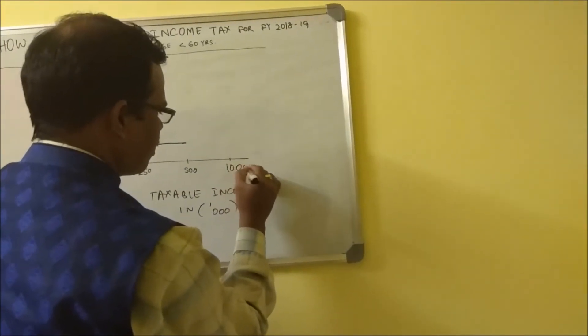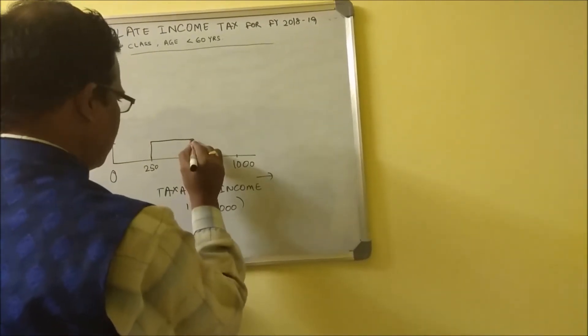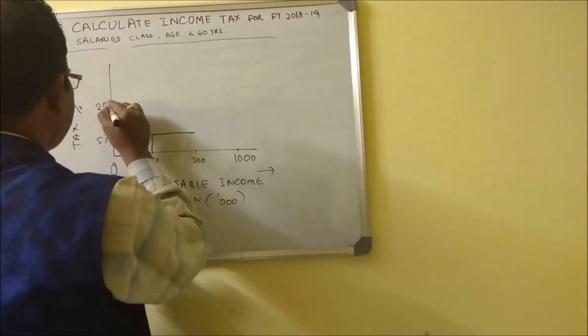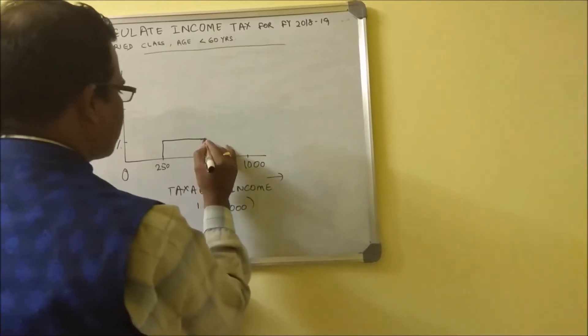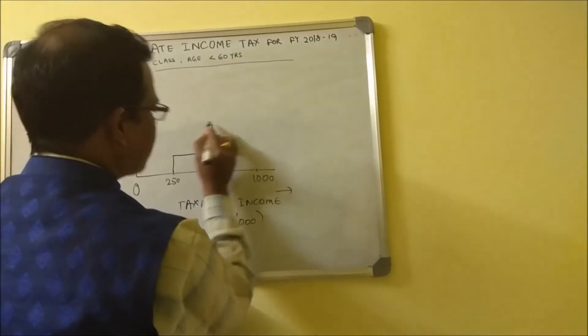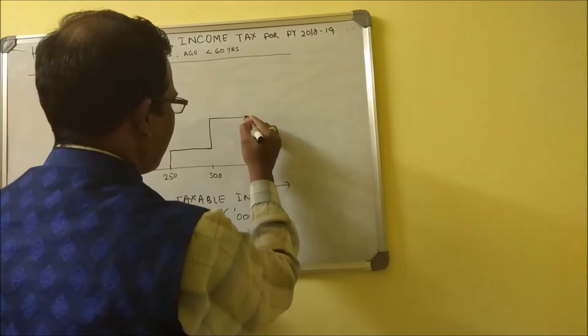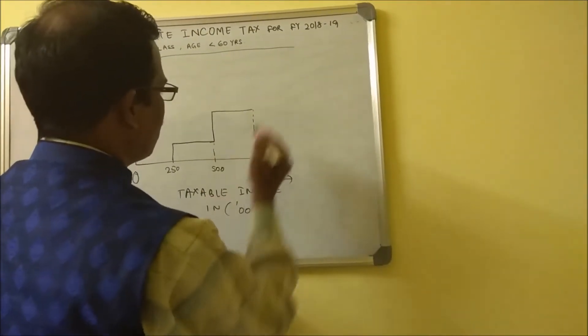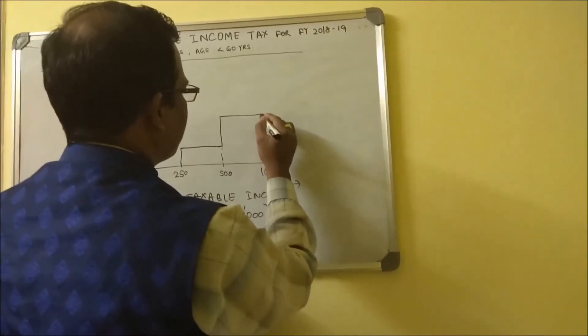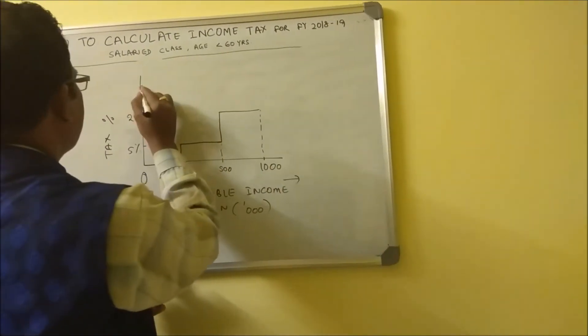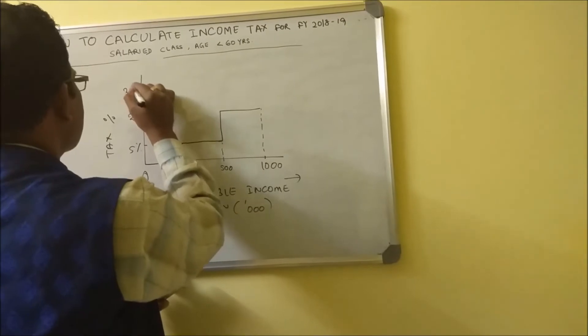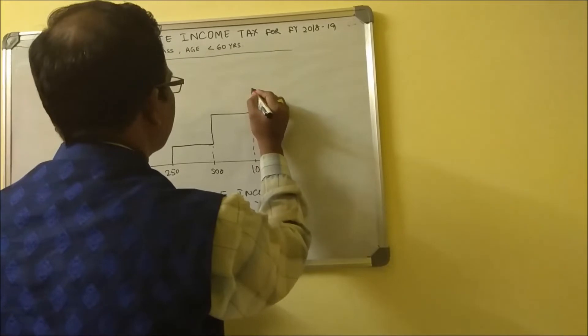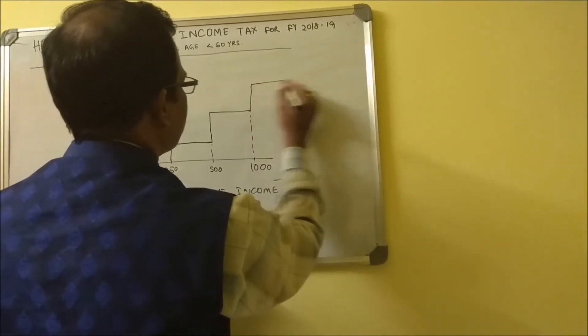This is 20 percent. This again goes like this and remains up to 10 lakh, and then it goes to 30 percent. Beyond 10 lakh it's all 30 percent, so like this.